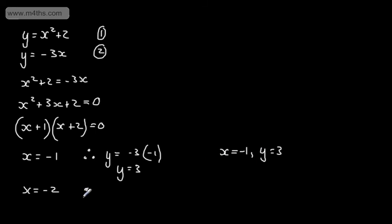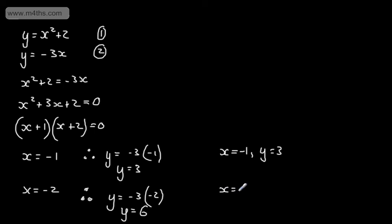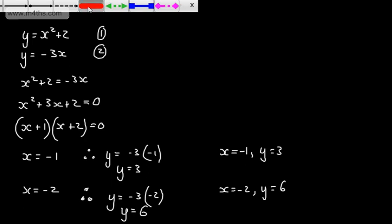Now considering when x equals minus 2: y equals minus 3 times minus 2, which gives y equals 6. So when x equals minus 2, y equals 6. If asked for the coordinates of the points of intersection of these two graphs, those would be (−1, 3) and (−2, 6).